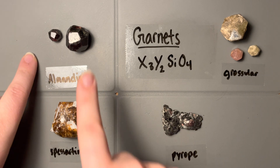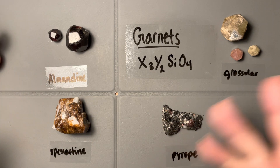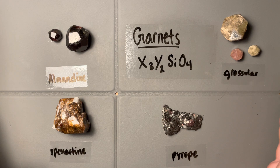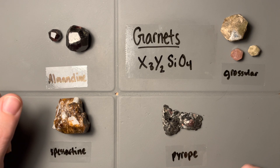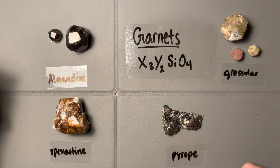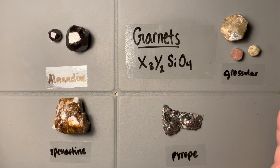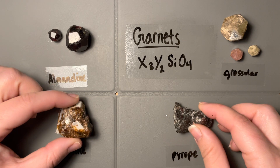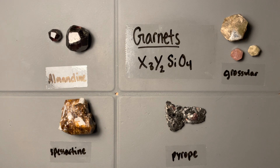Grossular is usually easier to identify just because it's lighter in color. To summarize, garnets in general have a vitreous luster, beautiful isometric euhedral crystal forms, are moderately to quite dense, very hard, no cleavage, and conchoidal fracture. Garnets are really fun, and this is only a small sample of the amazing garnets out there — you can get some really beautiful colors with the gem-quality ones too.